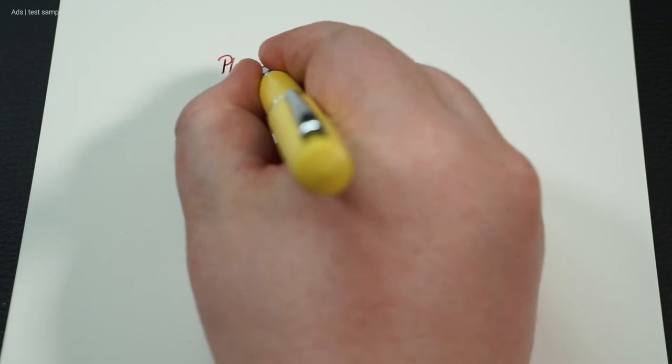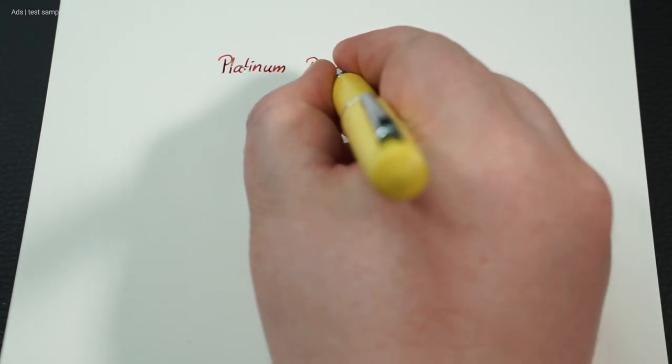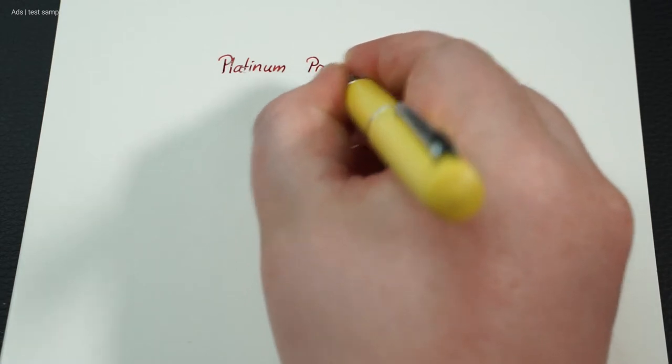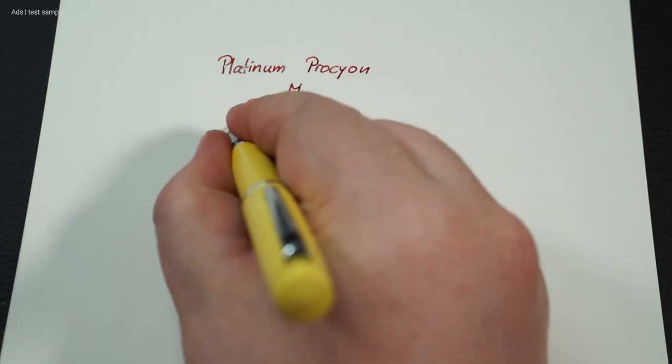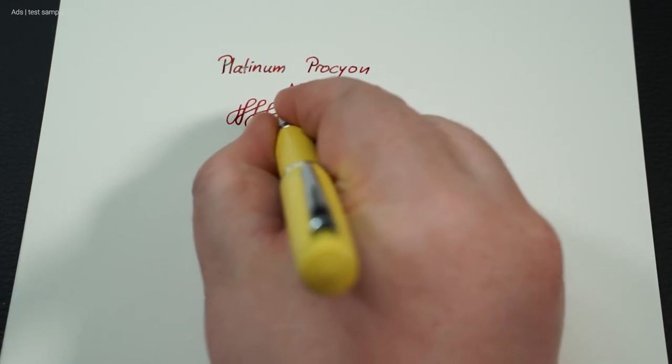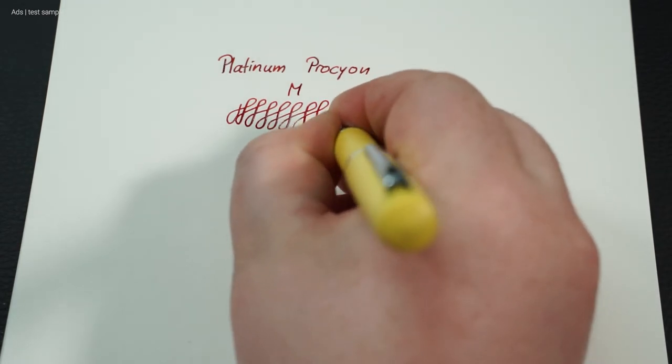Let's move on to the writing test. The Platinum Procyon writes pleasantly with a small feedback. The nib is relatively stiff, but a slight line variance can be produced.